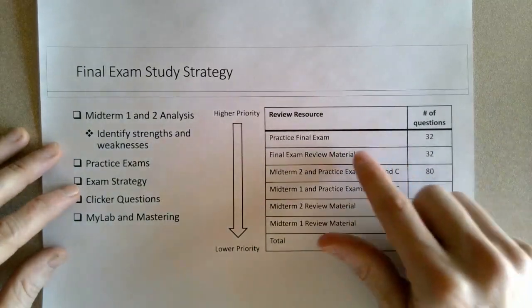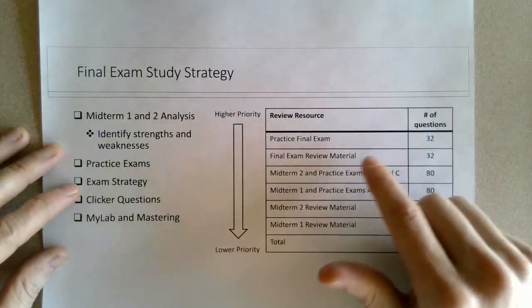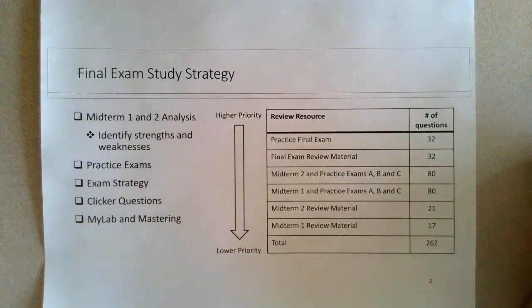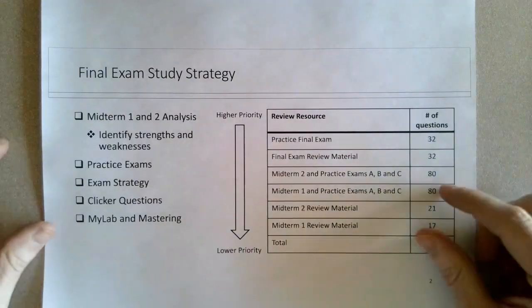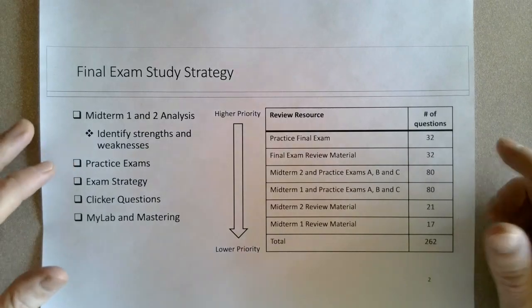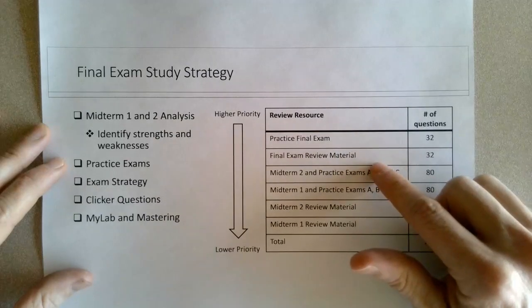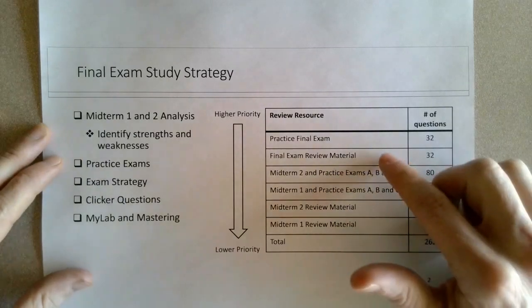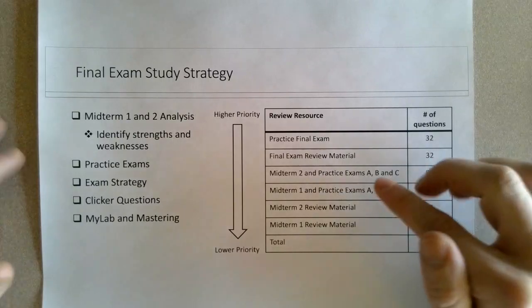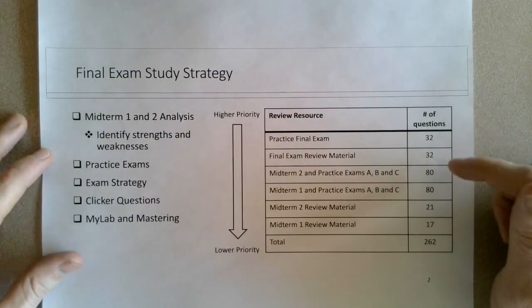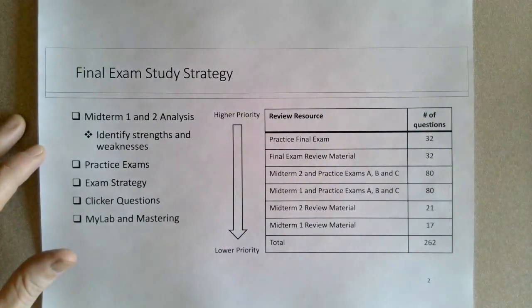This final exam review material consists of another 32 questions set up like a practice exam, just written in PowerPoint rather than a Word document. I think the questions are all valid exam questions. These are the two pieces of material that give you a sample of exam questions on material examined post-Midterm 2 — going from stress and strain into momentum and into energy, so chapters 8 through 10. These are your best two examples of what exam questions would look like in those new topics.